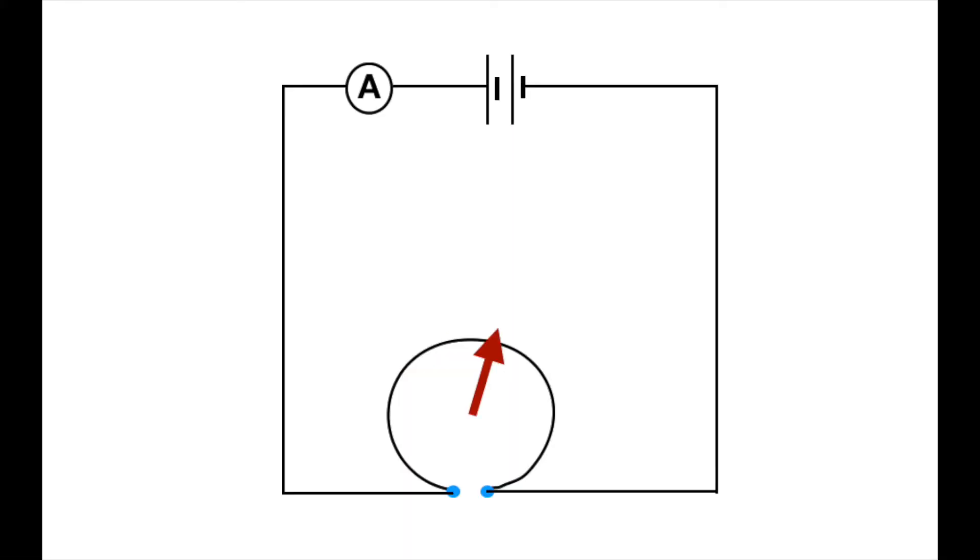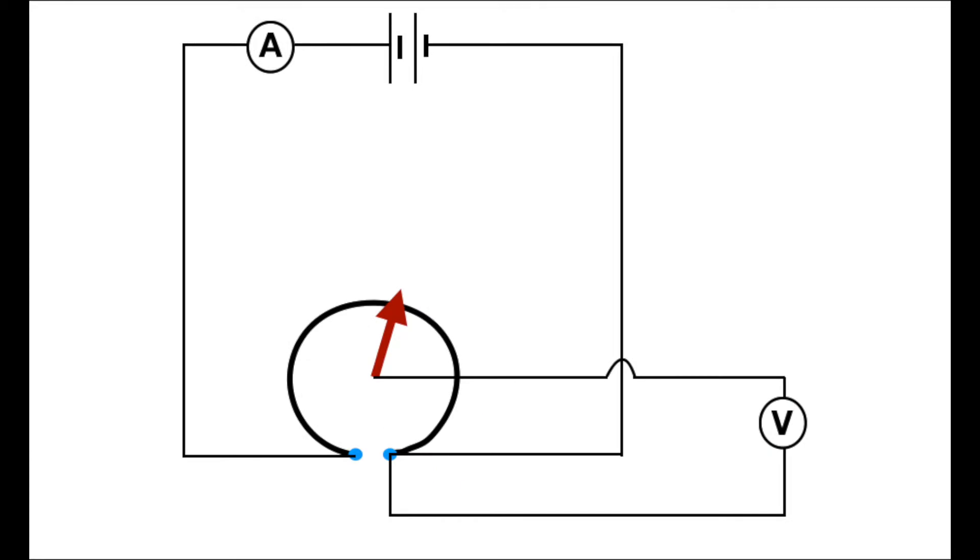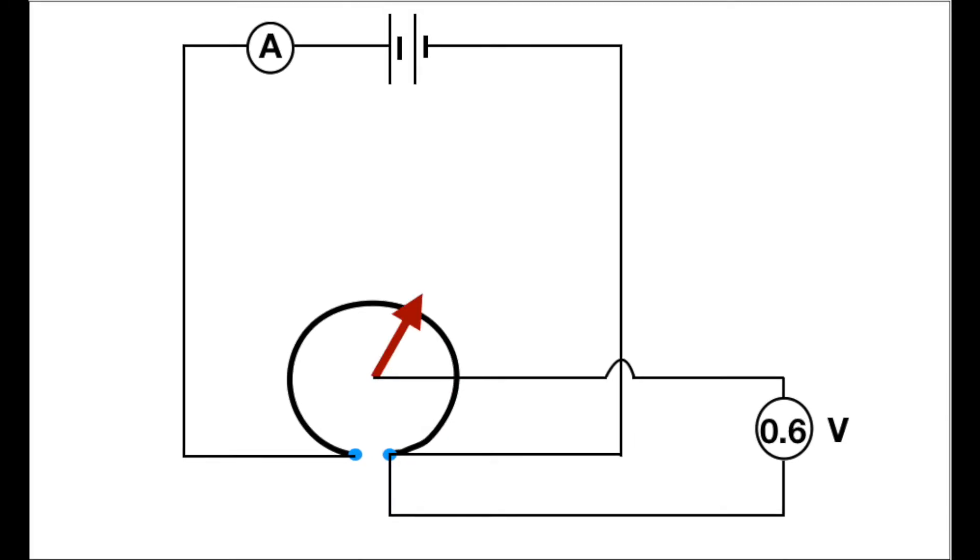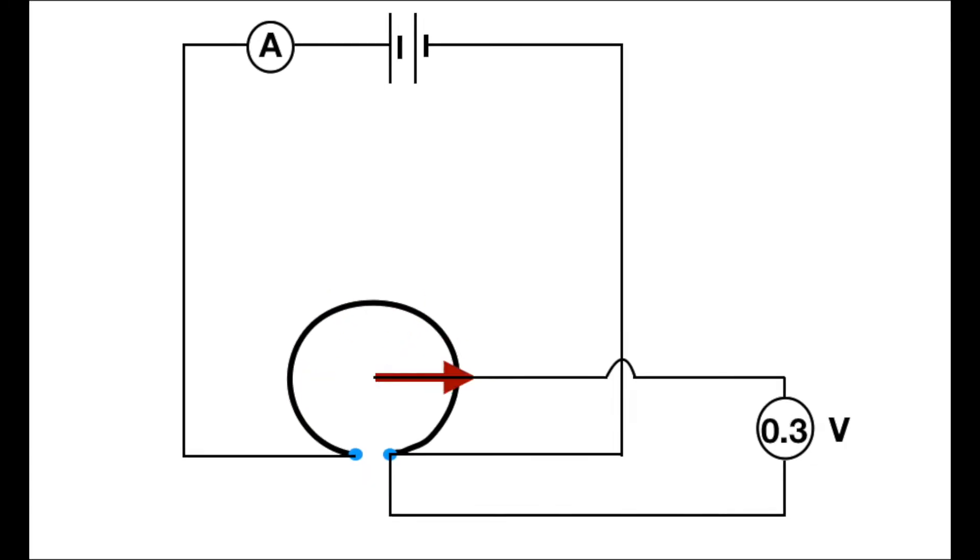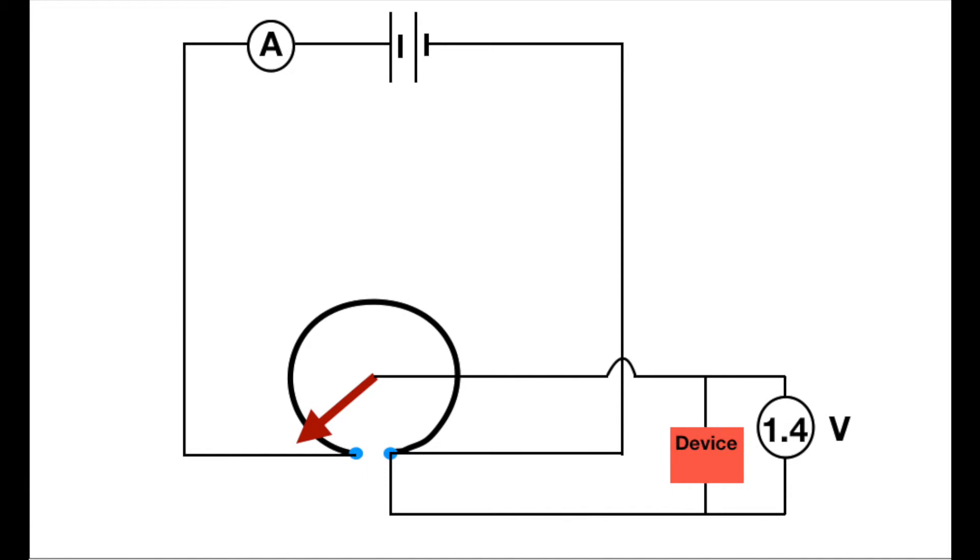If we then take that piece of graphite and put it with its sliding contact in a circuit as you can see here, as we slide the contact around, the potential difference or voltage changes. As before, we can produce a range of potential differences or voltages up to the maximum of the supply.